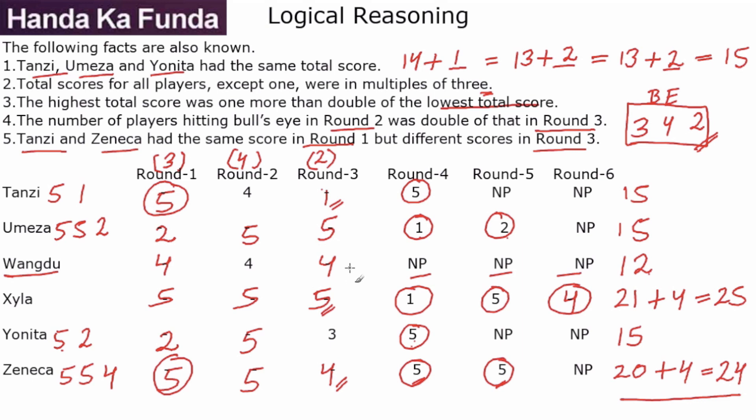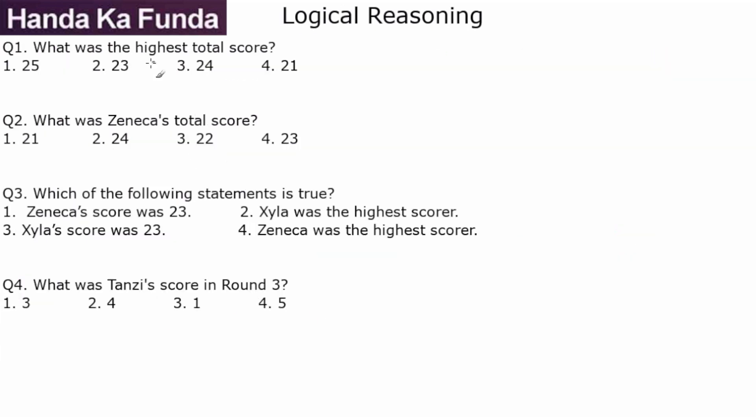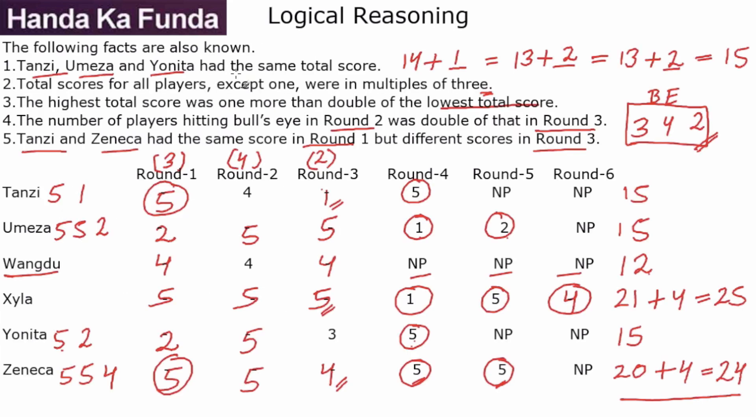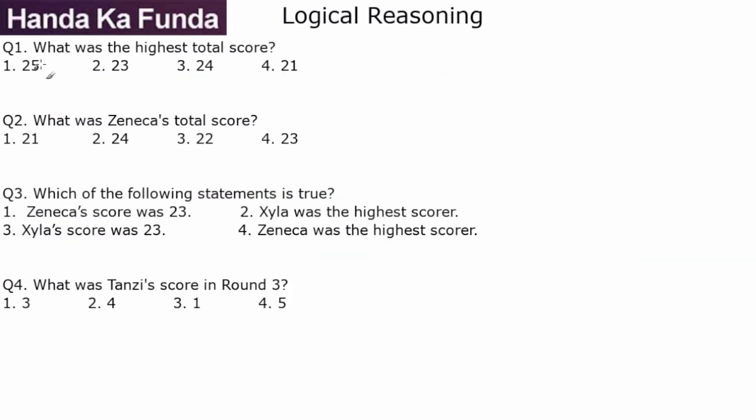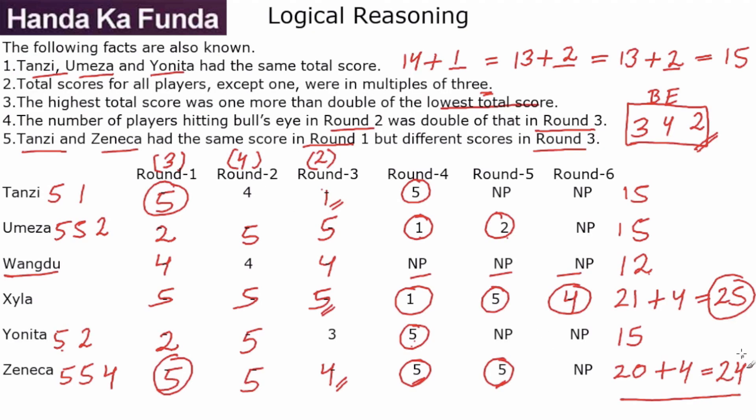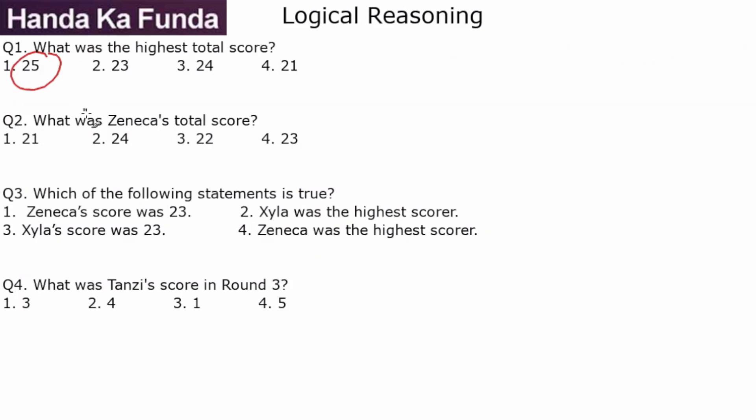It took a long time to finish the table, but once you finish the table, finding out the answers is going to be really, really simple. Let us have a look at the questions. Now, what was the highest total score? So we had highest total score as 25 for Xyla. What was Zeneca's total score? Zeneca's total score we found out as 24.